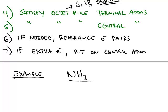Step six, if needed, rearrange the electron pairs, and we'll talk in more detail about why that would have to be done. And then step seven, if you have any extra electrons, they always go on the central atom.